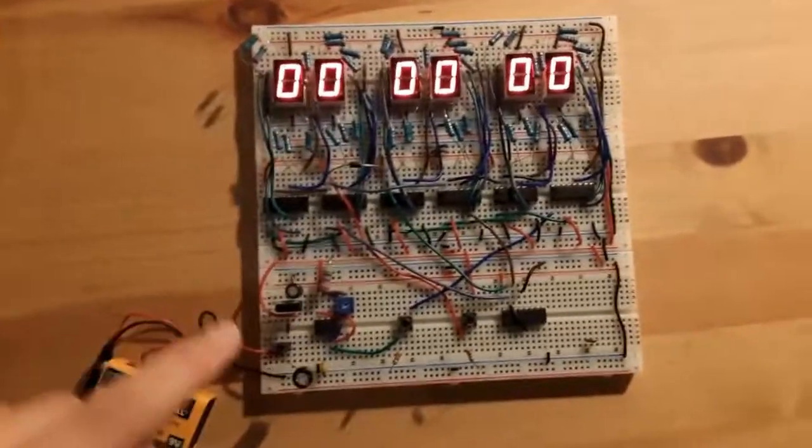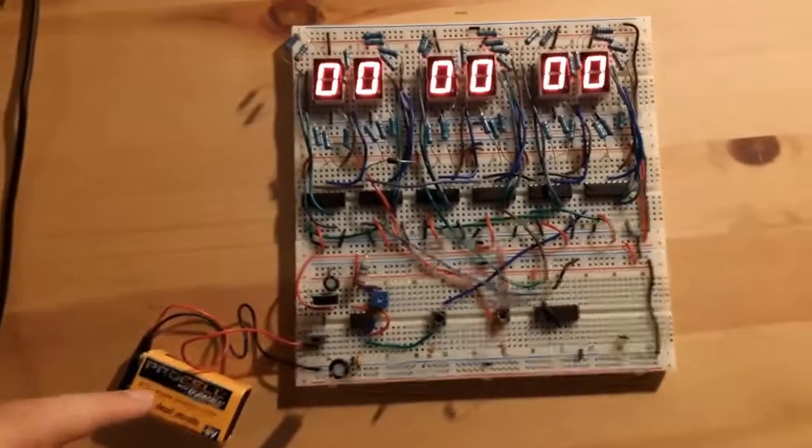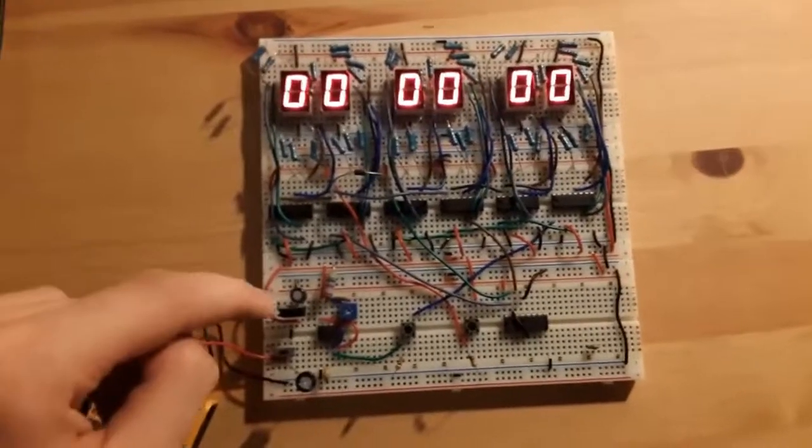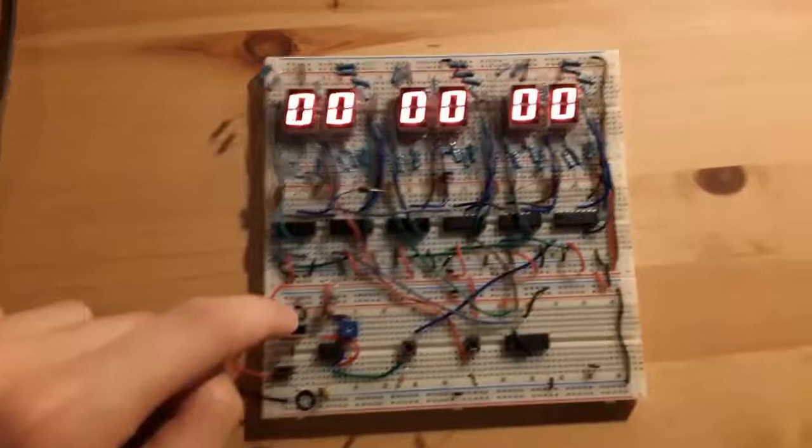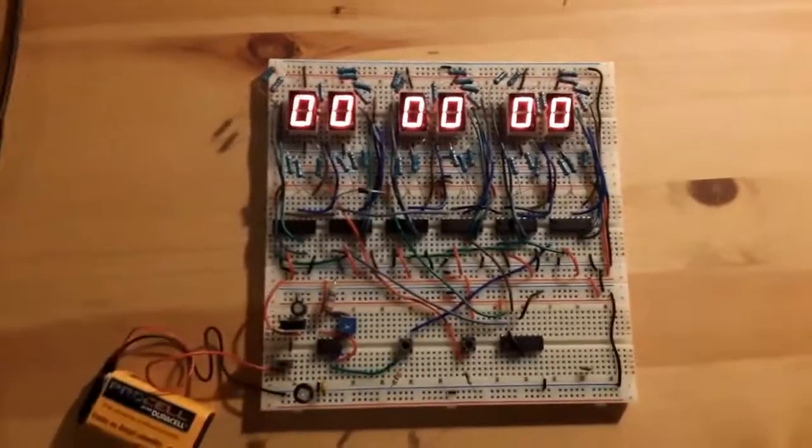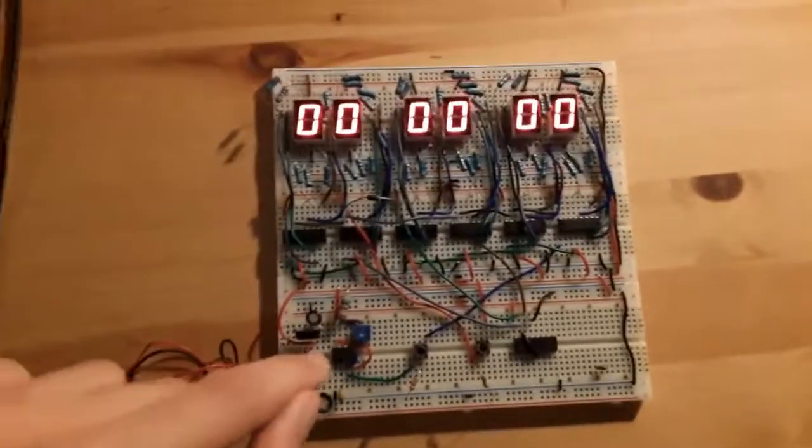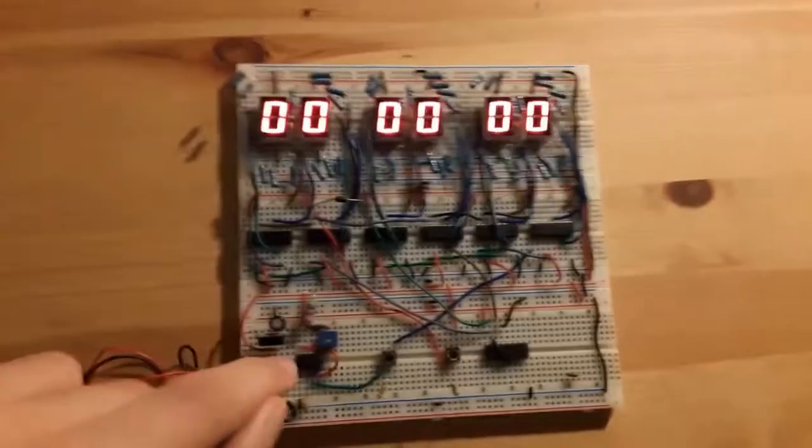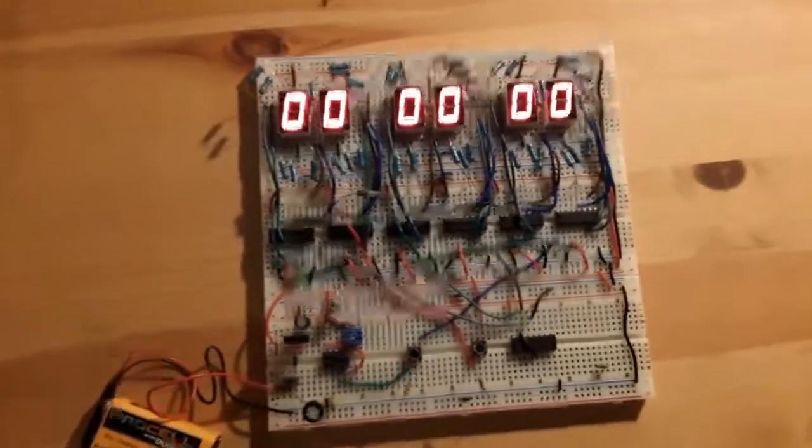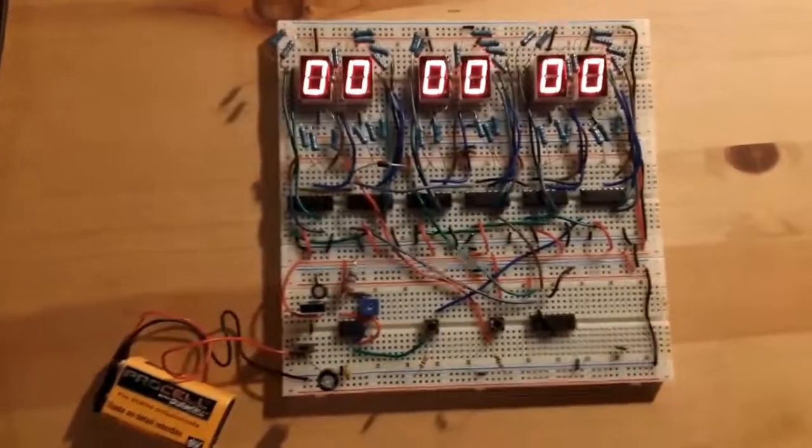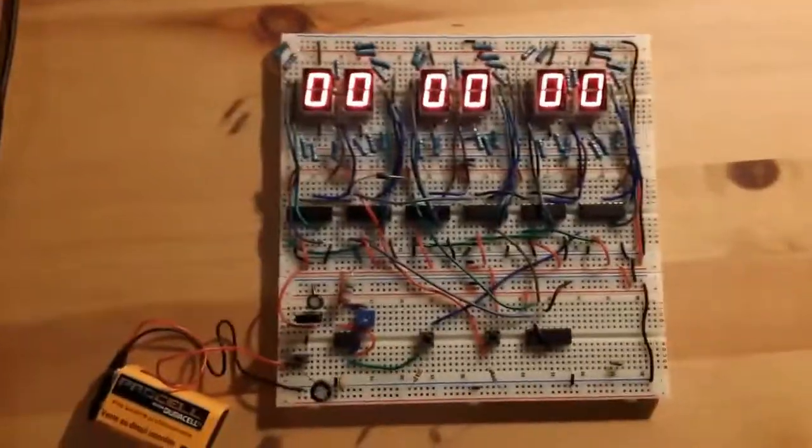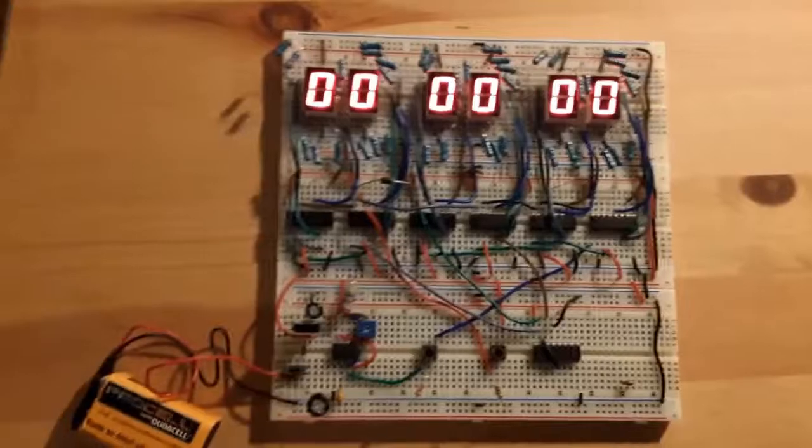On this side, you have a 9-volt alkaline battery, and it powers a little voltage regulator over here, and that behaves as our power supply. You've got a 555 timer over here with a few resistors and caps, and that is behaving as our pulse generator. It generates periodic pulses 100 times per second.